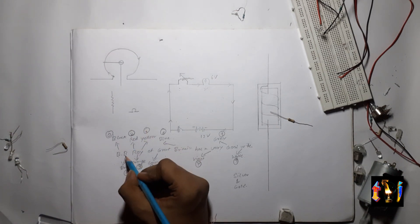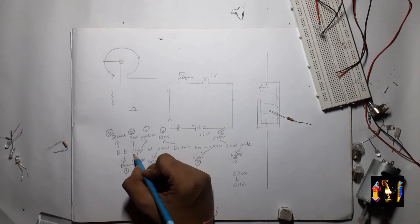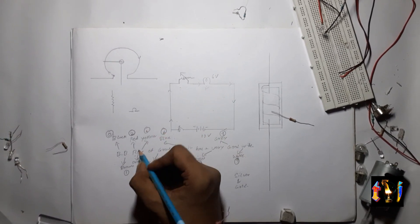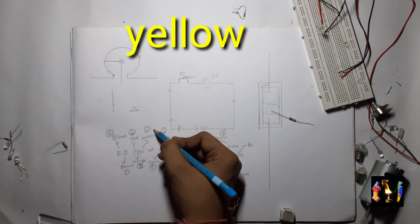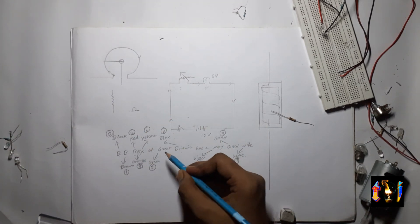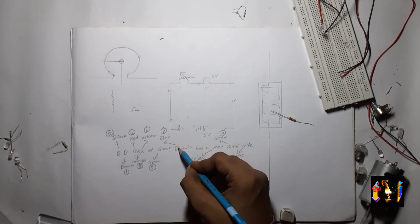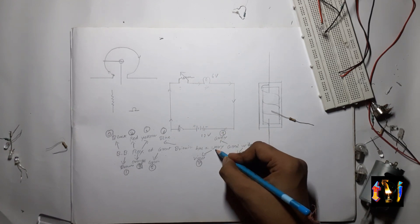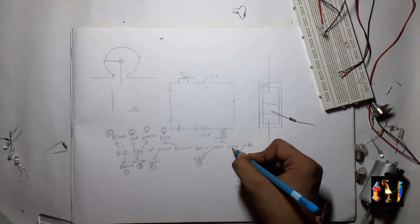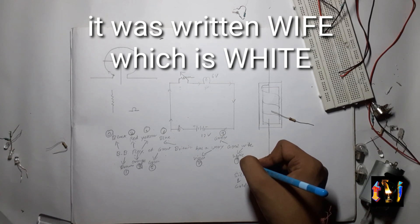Black is 0, B resembles brown which is 1. This R resembles red which is 2, this O resembles orange 3. Y resembles yellow 4, G resembles green 5. This B resembles blue which is 6. This V resembles violet which is 7, this G resembles gray which is 8 and this white resembles 9.